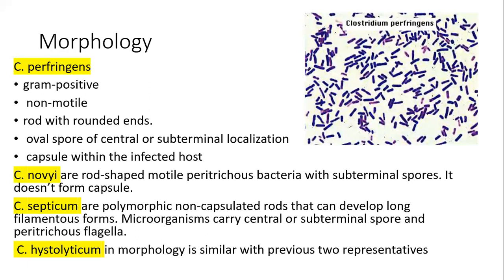Morphology: Clostridium perfringens is gram-positive, non-motile, with rounded ends. It has oval spores of central or subterminal localization and forms a capsule within the infected host. Clostridium novyi is rod-shaped, motile, with subterminal spores, and does not form capsules. Clostridium septicum forms polymorphic non-capsulated rods that can develop long filamentous forms, with central or subterminal spores and peritrichous flagella. Clostridium histolyticum is morphologically similar to the previous two.